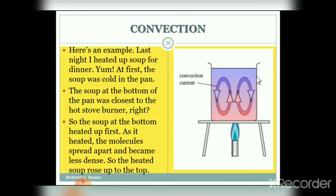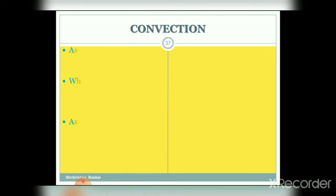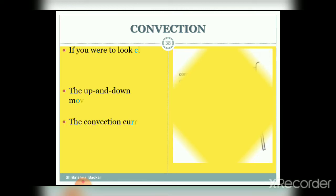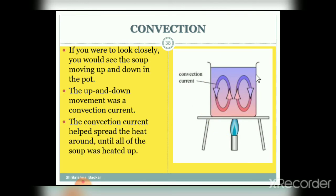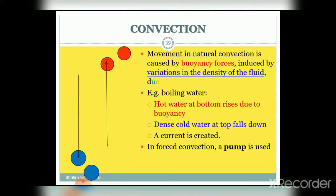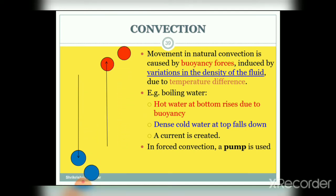As the hot soup rose up, the cooler soup at the top sank down to the bottom. When it was at the bottom it was closest to the heat, so that soup got hot and rose up again. As the soup continued heating, the hot soup rose and the cold soup sank. If you were to look closely you would see the soup moving up and down in the pot. This up-and-down movement was a convection current that helped spread the heat until all the soup was heated up.